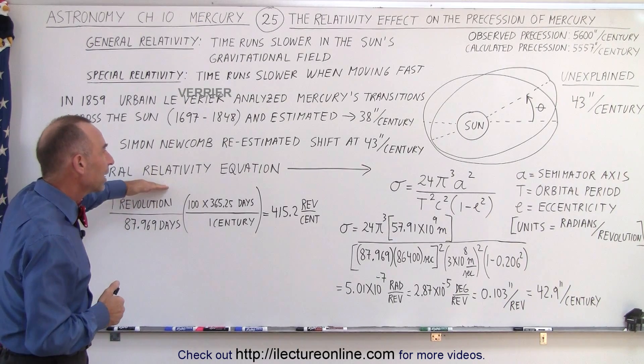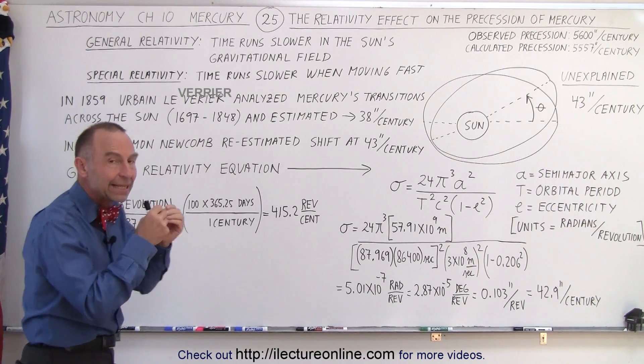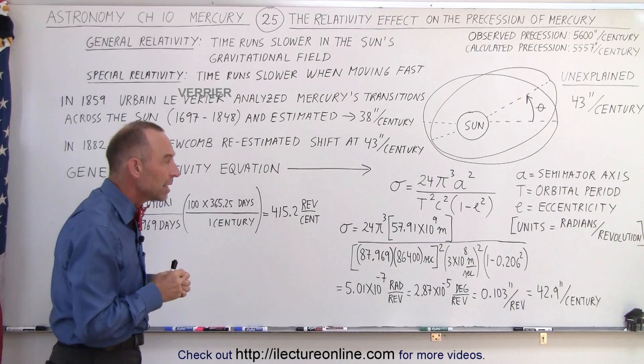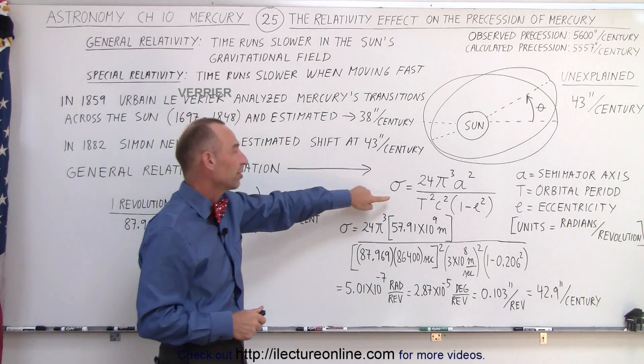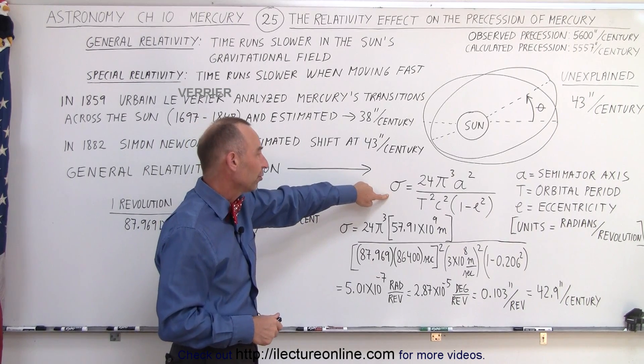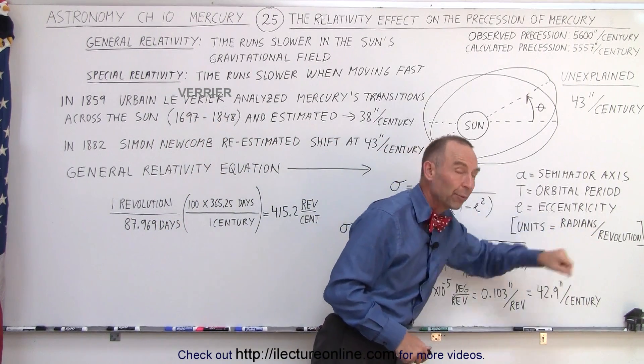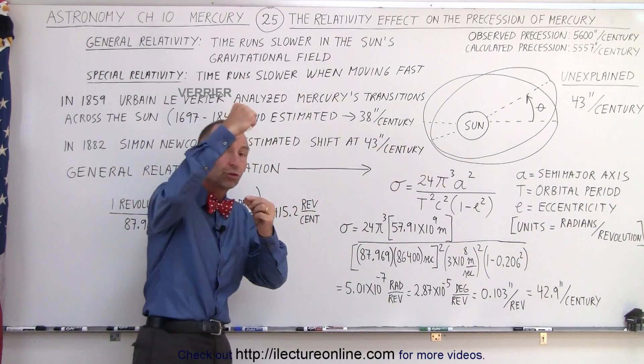So the equation that they derived then to explain that difference when Einstein came up with the theory and they finally derived the equation, this is what the equation ends up looking at. The difference in the shift and the units are going to be in radians per revolution.